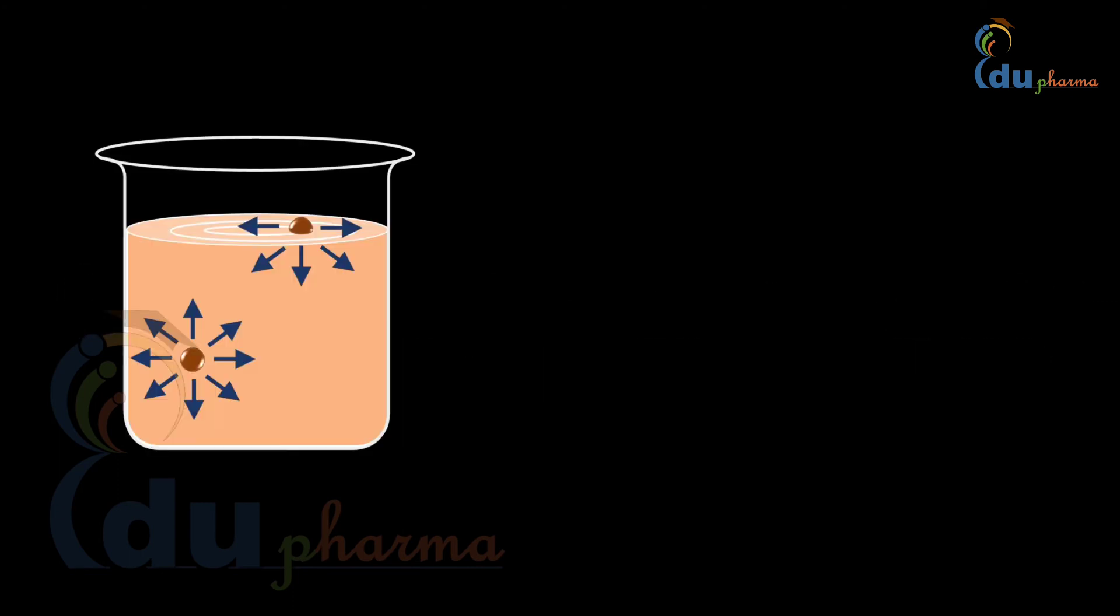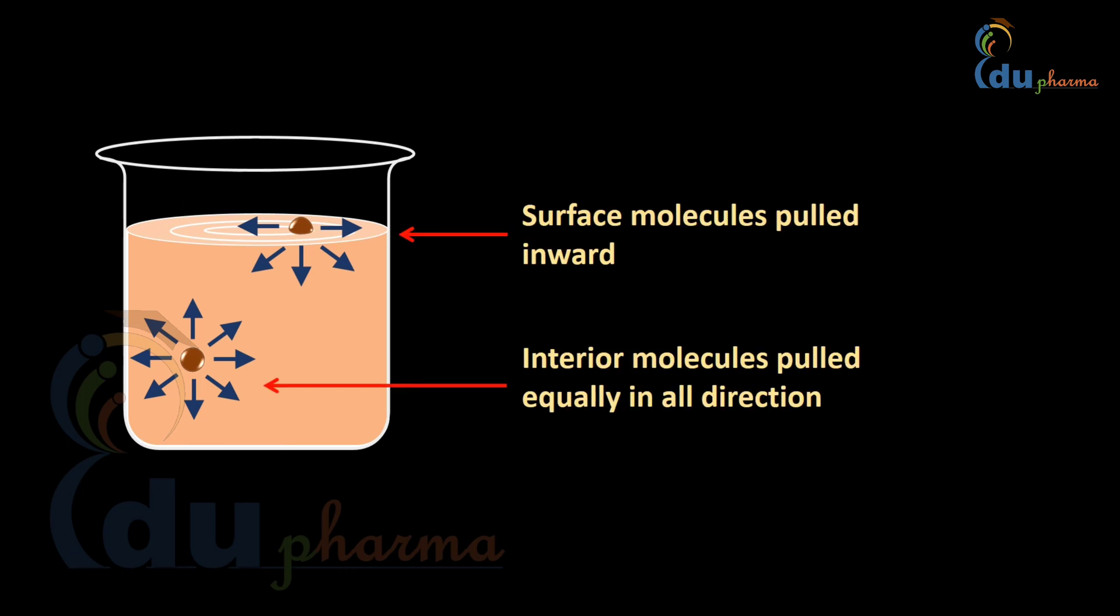At the liquid surface, molecules on the surface have neighboring molecules only on one side, and thus experience an attractive force which tends to pull them into the interior. At the bulk of the liquid, molecules in the interior experience an attractive force from neighboring molecules which surround on all sides. The net effect is that the molecules at the surface of the liquid experience an inward force toward the bulk of the liquid. Such force results in what is called surface tension.